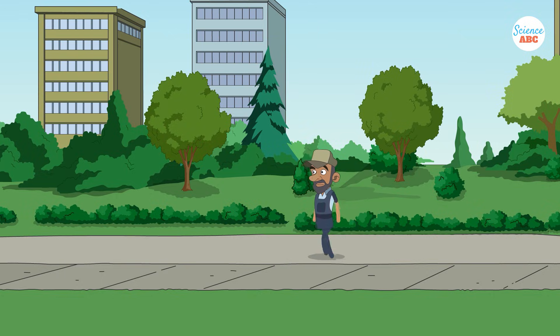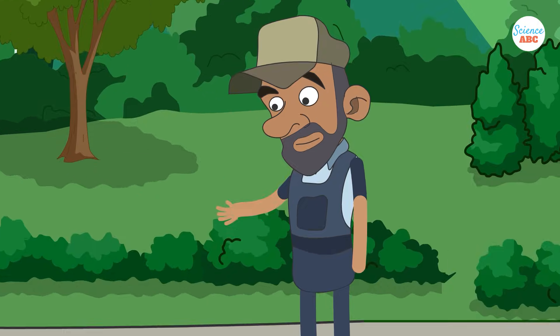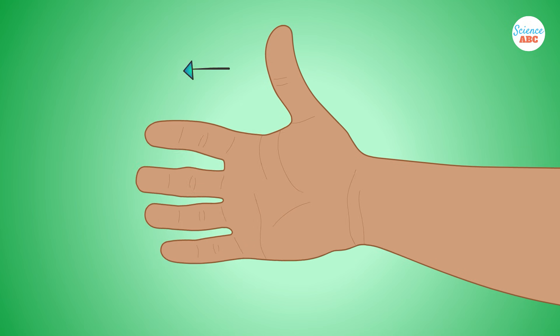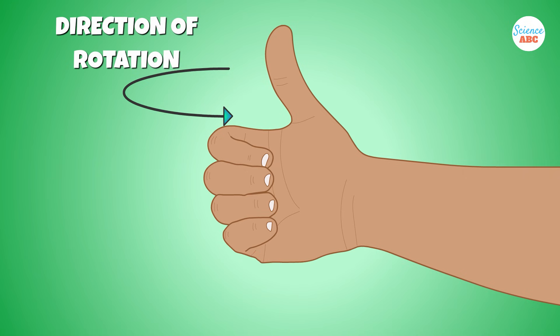The right-hand rule can determine the direction of torque. If you curl the fingers of your right hand in the direction of the rotation caused by the force F, your thumb will point in the direction of torque.